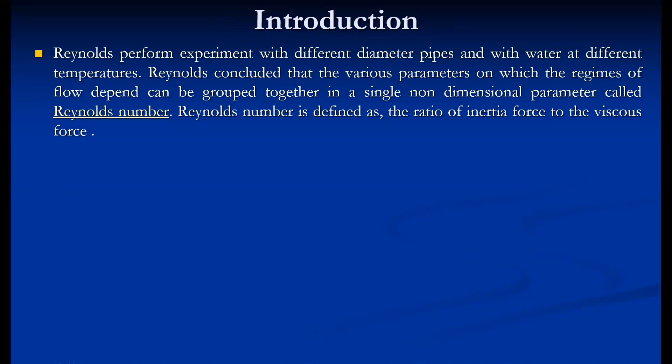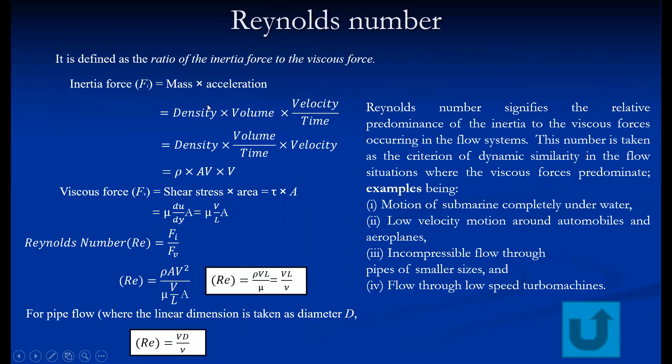Reynolds performed many experiments taking different diameter pipes with water at different temperatures. From these experiments, Reynolds concluded that the various parameters on which the regimes of flow depend can be grouped together in a single non-dimensional parameter called the Reynolds number. Basically, Reynolds number is the ratio of inertia force to viscous force.